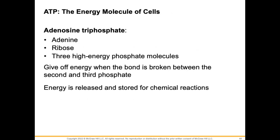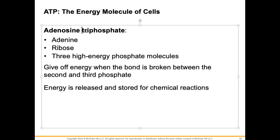ATP — adenosine triphosphate. 'Tri' meaning three, so it has three phosphates — three phosphate molecules. We have adenine, ribose, and three phosphates. They give off energy when the bond is broken between the second and third phosphate, and then energy is released and stored in ATP for chemical reactions.